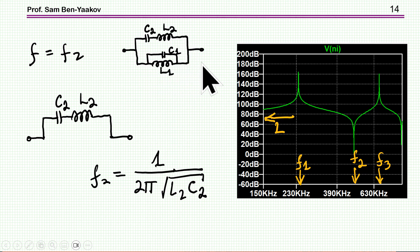so it's sort of shorting this branch here. So, this doesn't matter. And therefore, we can write a second equation that F2 is 1 over 2π√(L2·C2).